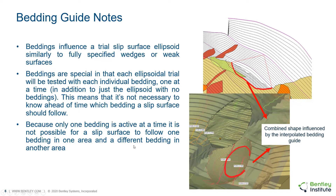Because only one bedding is active at a time, it's not possible for a slip surface to follow one bedding in one area and a different bedding in another area. If the user would like to get two surfaces influencing the sliding mass in a combined way, they could proceed with different features such as weak surfaces and faults. Here in the image, we can see the influence of the bedding guide in the model — where the ellipsoid would cut through and beneath the bedding, instead it follows the bedding, as we can see in the 2D and 3D views.